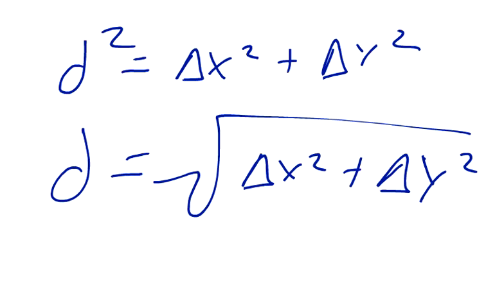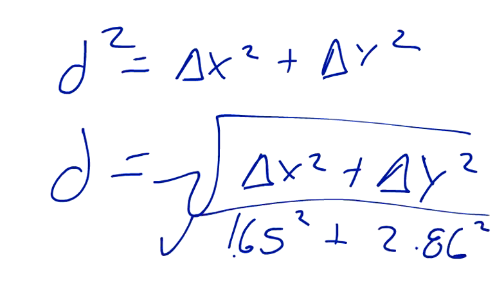And if you plug your numbers of 1.65 squared plus 2.86 squared and square root that, you should get approximately 3.3. And if you don't, then you did something wrong with your math, because it equals 3.3. So that is the distance.